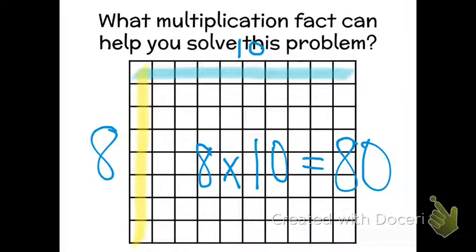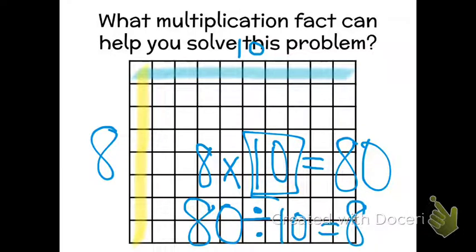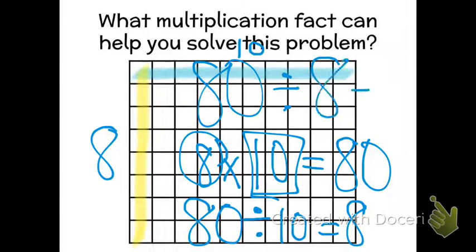Well if I know division I have a fact family. So I could do 80 divided by 10 and that would equal 8. I could also do 80 divided by 8 which would equal 10.